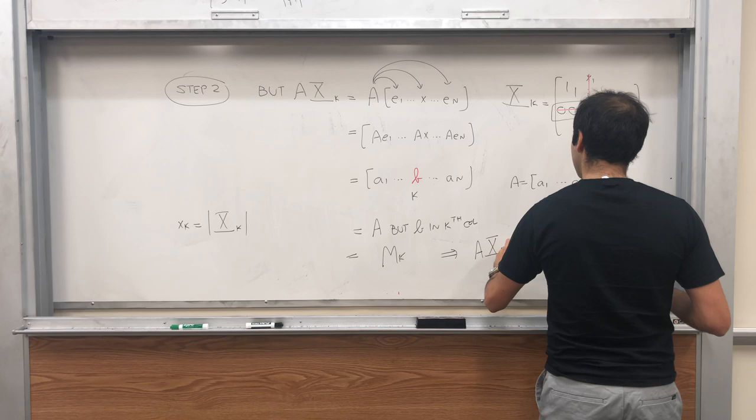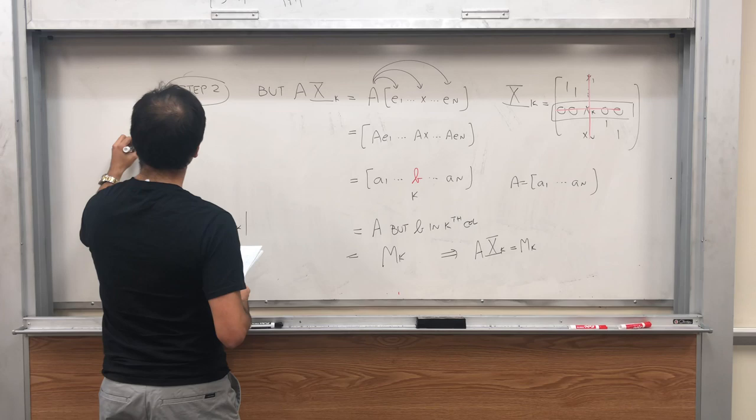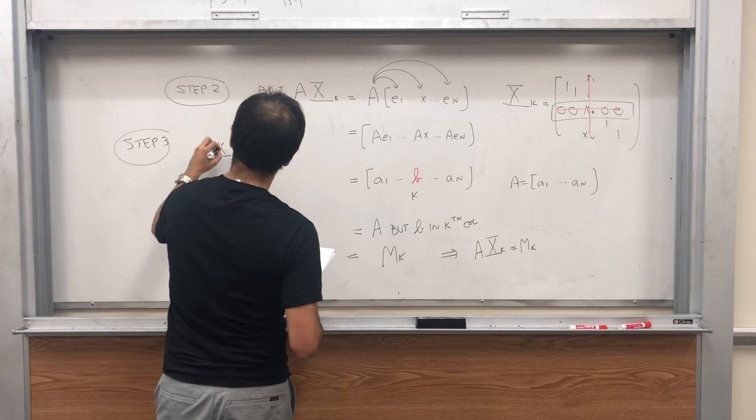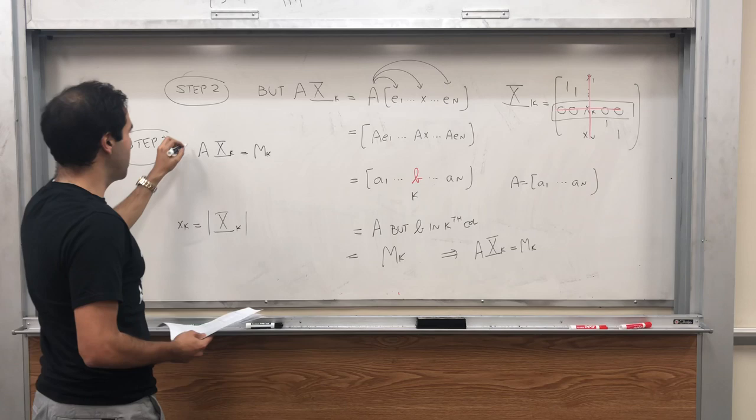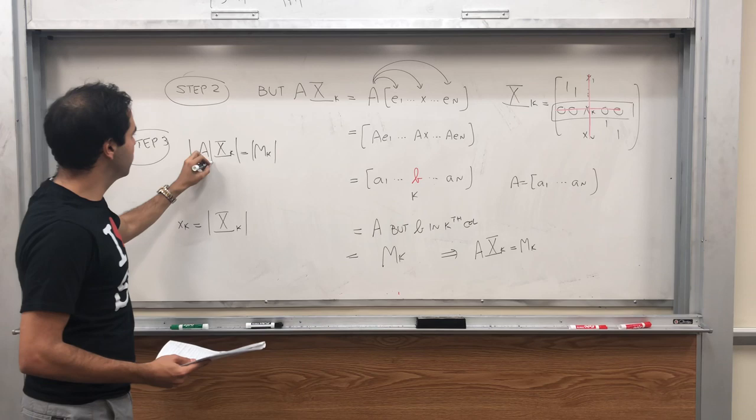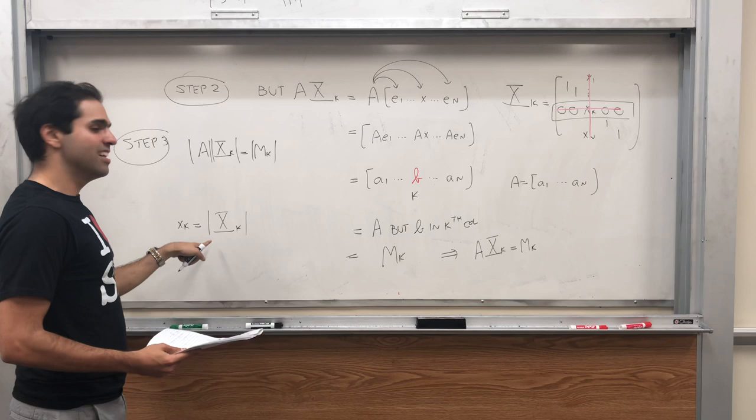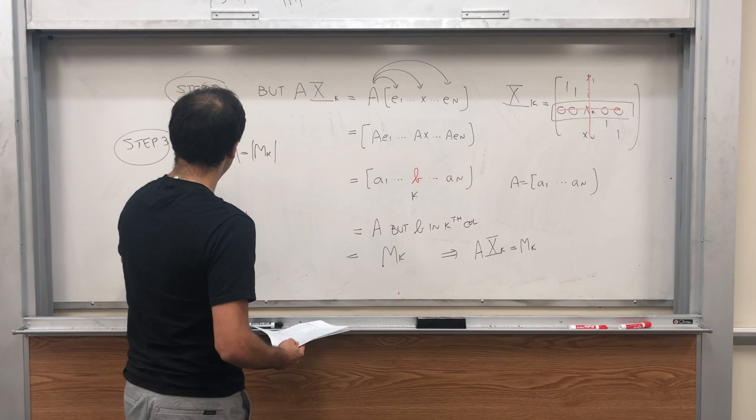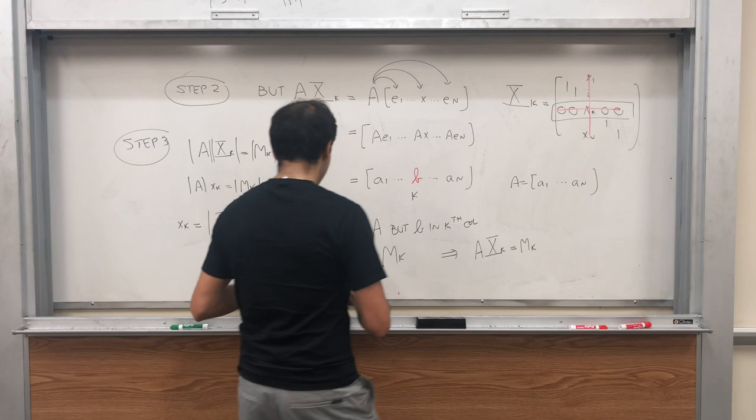So what can we conclude? We conclude that A Xk is Mk. And step 3 is just to take determinants. So we have A Xk equals Mk. Then, as I said, take determinants. And remember determinants are multiplicative, so it's the determinant of A times the determinant of Xk equals Mk. But now remember, the determinant of Xk is little xk. So A xk equals Mk.